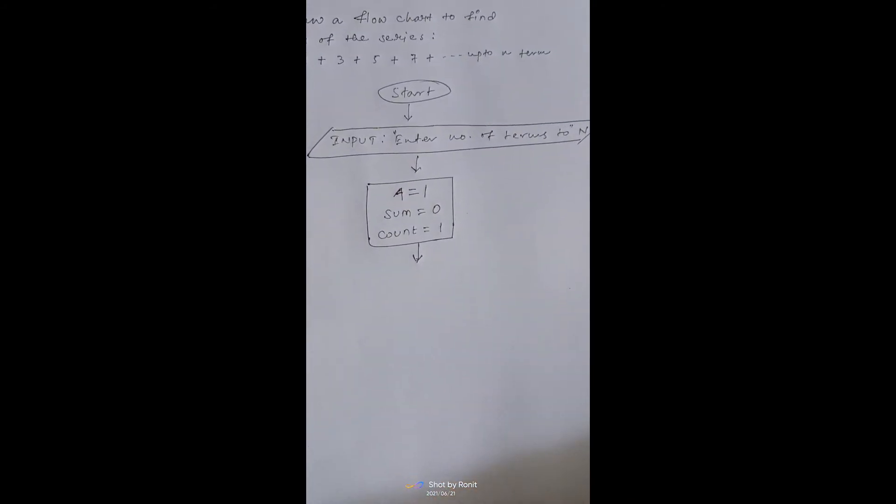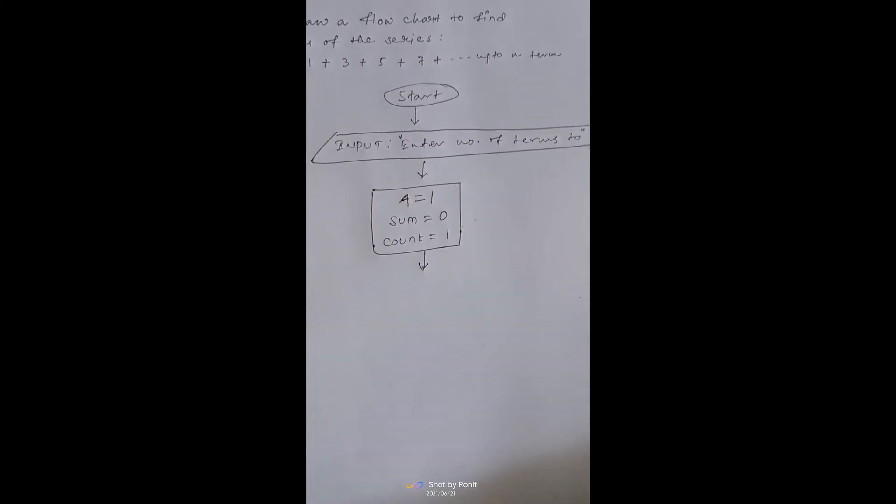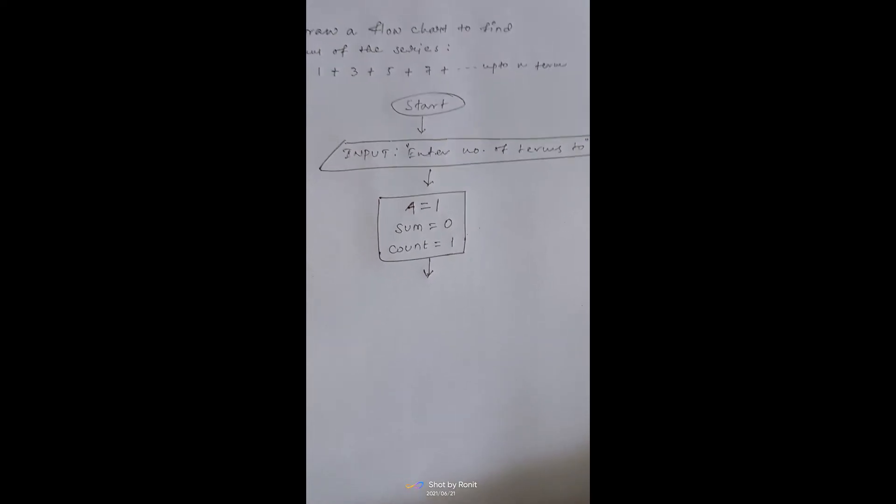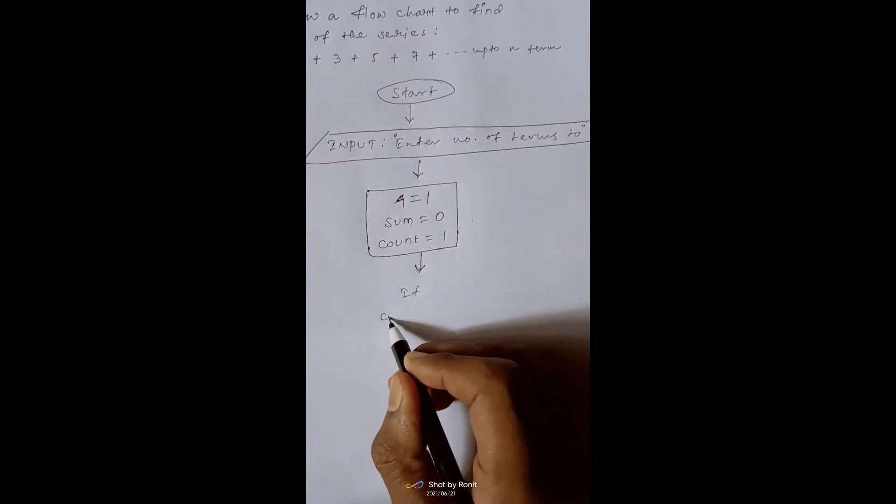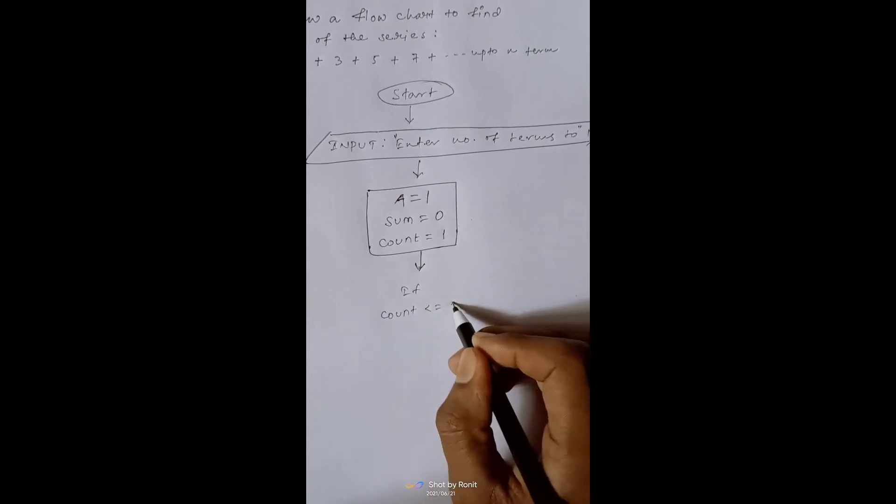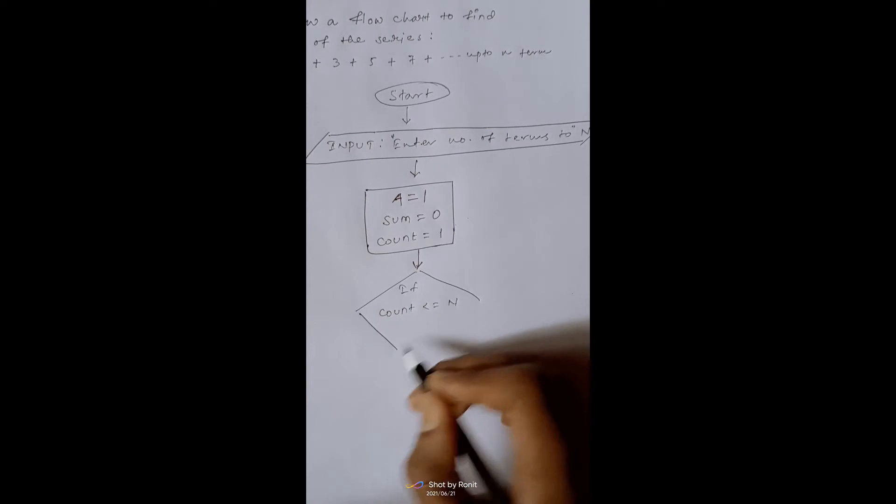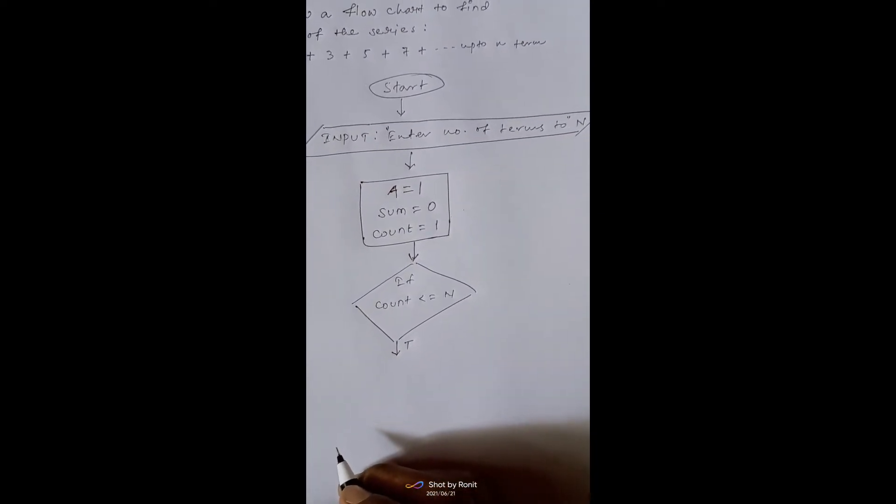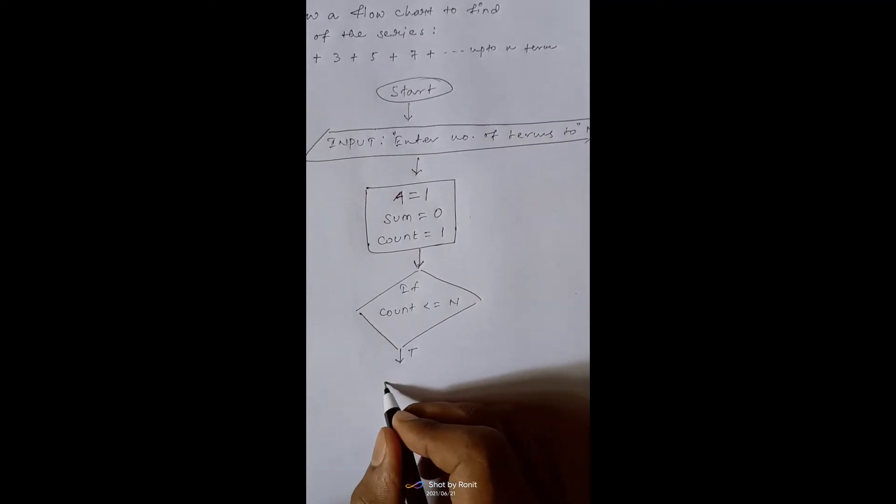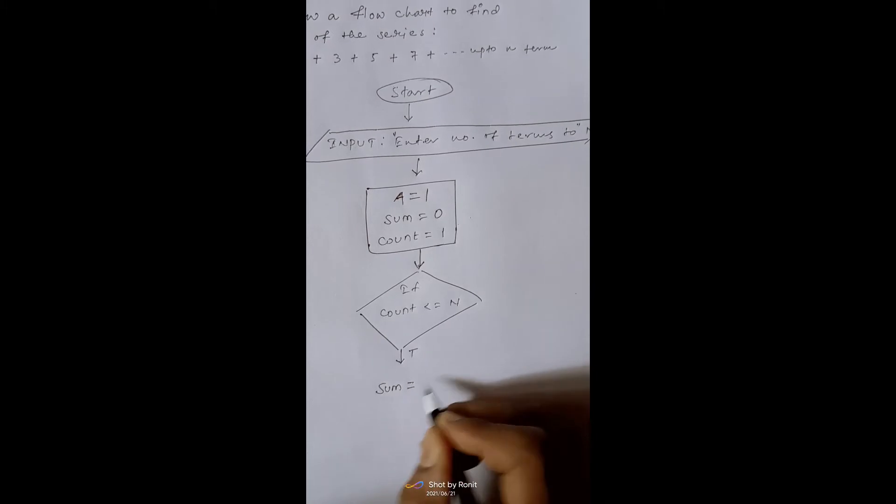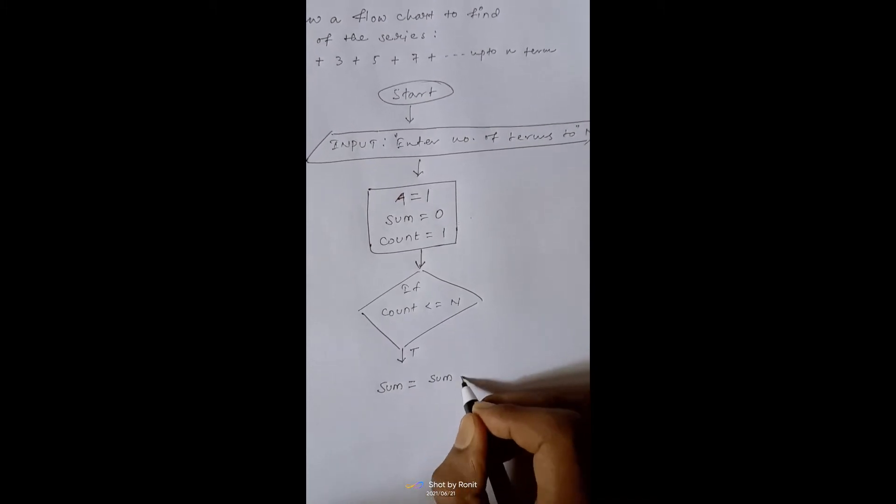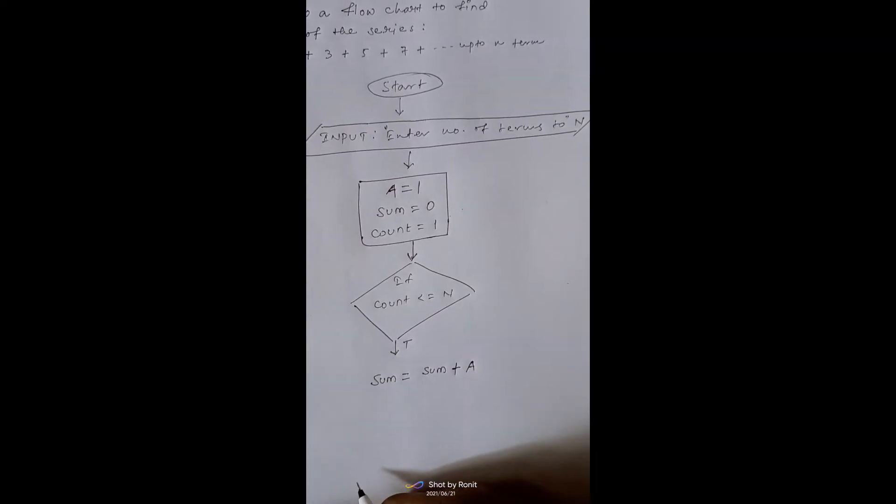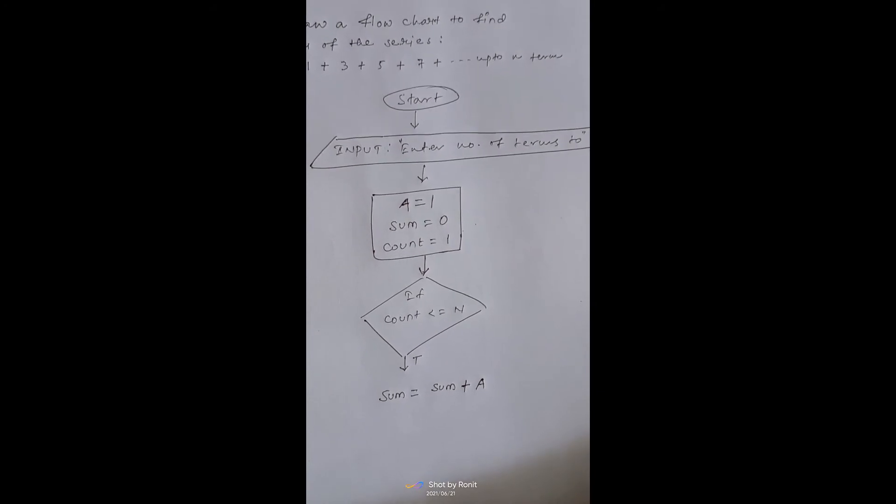We have to check the condition whether the number of terms is less than n. So we check count less than equals to n or not. If it is true, then we will add the number. That is sum equals to sum plus a.